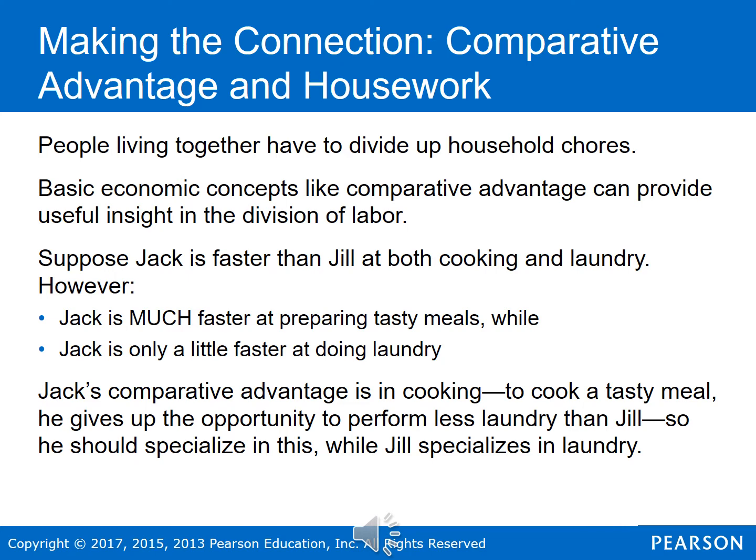Suppose that Jack is faster than Jill at both cooking and laundry, so Jack has an absolute advantage in both. But let's say Jack is much faster at preparing tasty meals while only a little faster at doing laundry. So Jack's comparative advantage is in cooking — to cook a tasty meal, he gives up the opportunity cost of performing less laundry than Jill would. So he should specialize in producing tasty meals while Jill specializes in laundry, since she ends up with a lower opportunity cost of producing laundry.